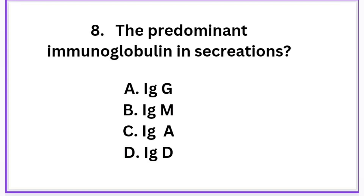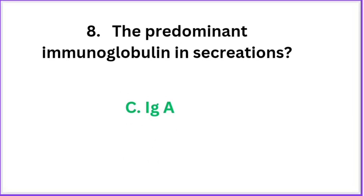The predominant immunoglobulin in secretions: Option A: IgG, Option B: IgM, Option C: IgA, Option D: IgD. The correct answer is Option C — IgA. Immunoglobulin A is predominant in secretions.